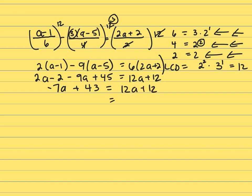Let's add 7A to both sides, and that gives me 19A. Now let's subtract 12 from both sides. That's 31 equals 19A. So divide both sides by 19. You get 31 over 19 equals A.